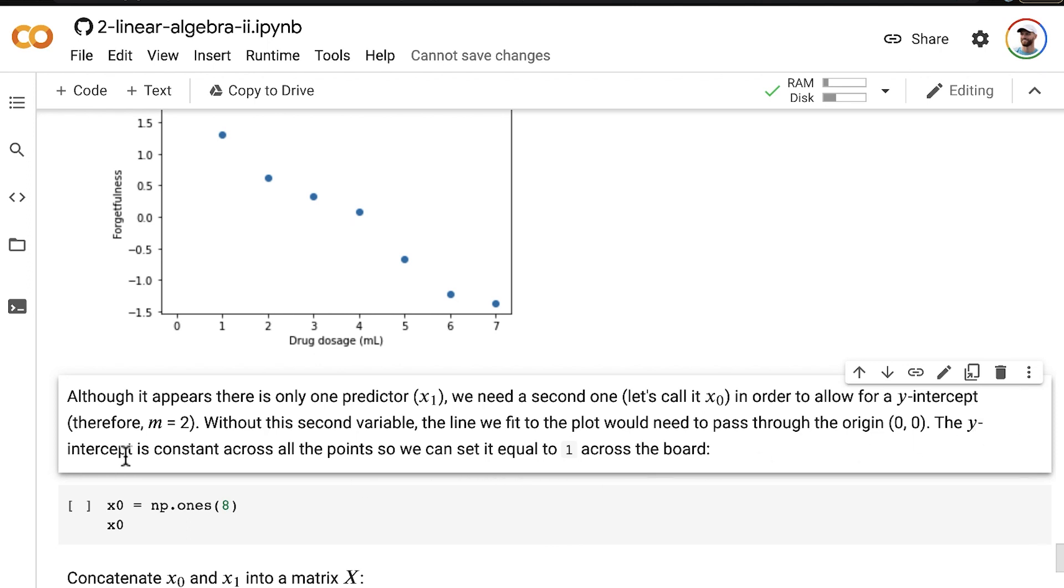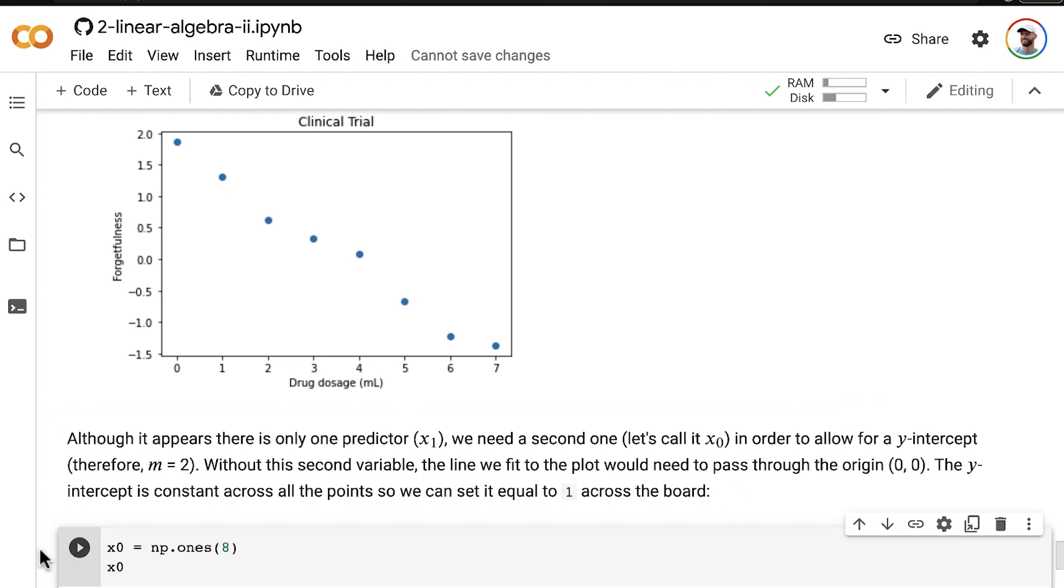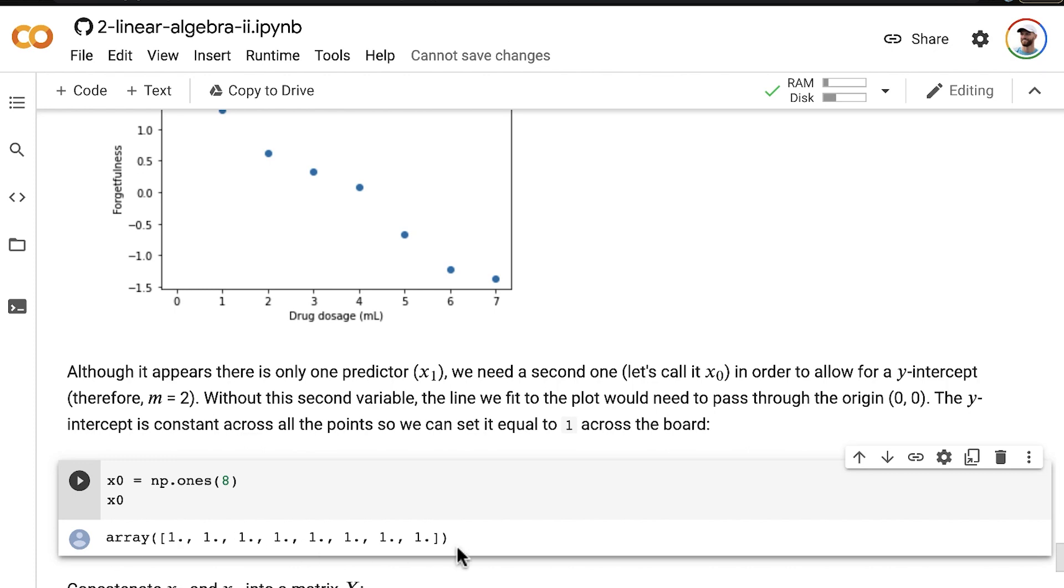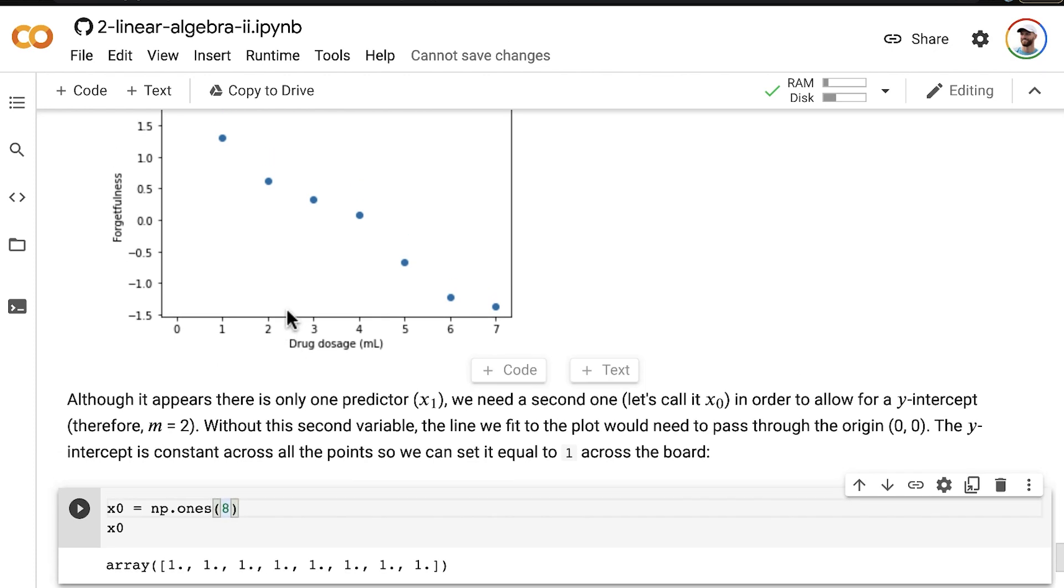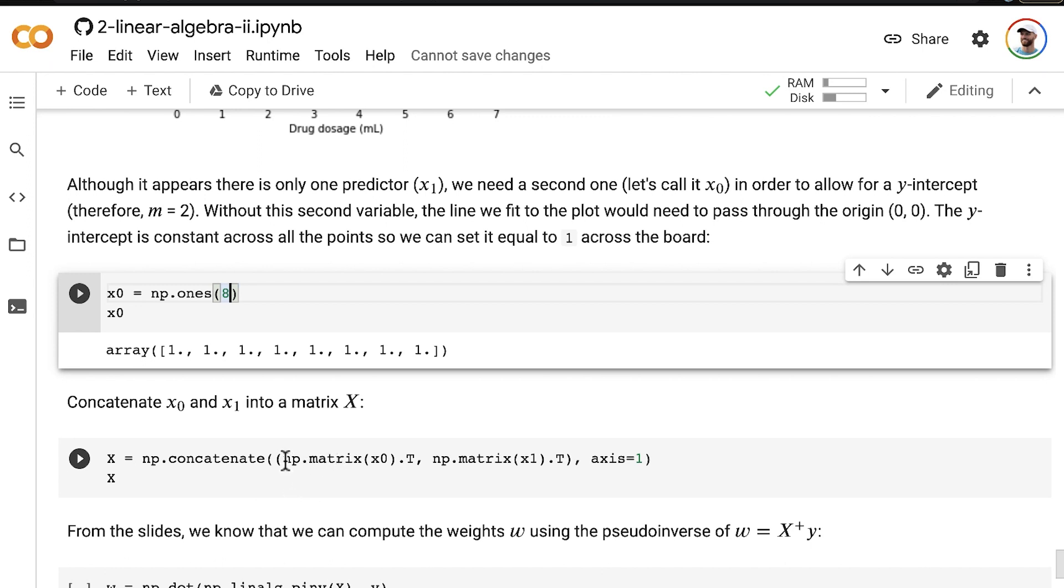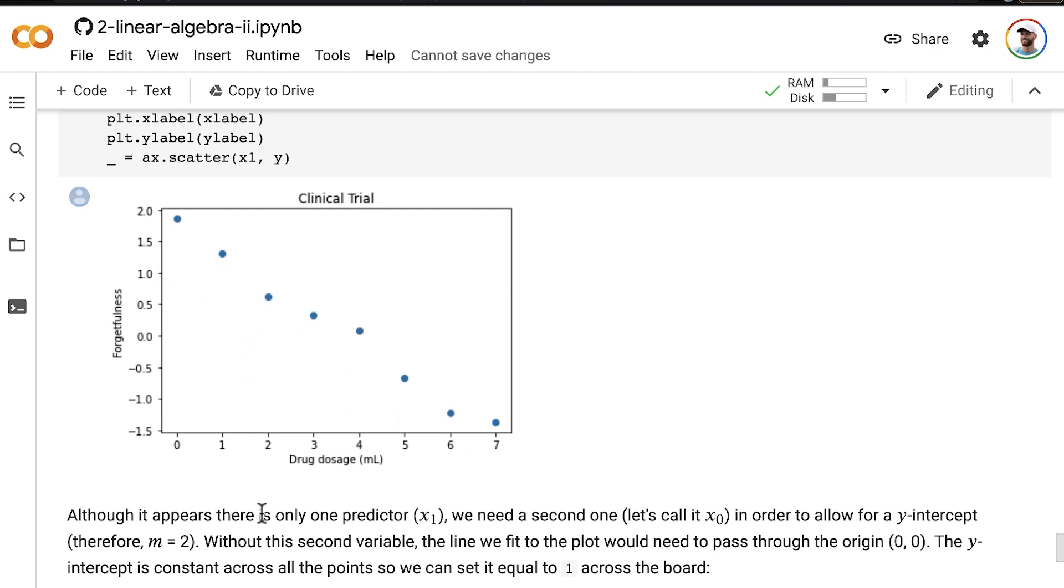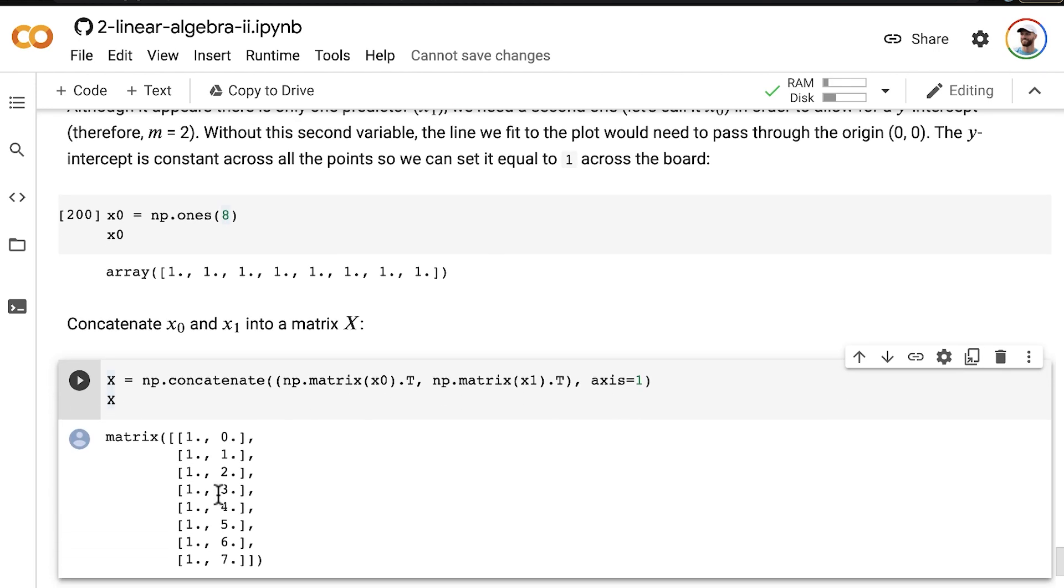The y-intercept is constant across all of our points. So we set it equal to one across the board. We can just set X0 equal to an array of ones, eight of them, because we have eight data points. And then now we can concatenate our X0 and X1 vectors into a matrix. I'm going to transpose both vectors and then concatenate them together, setting axis equal to one so that they're concatenated as columns next to each other. Here's X0 for our y-intercept. And then we have our actual varying drug dosage values as the other column in matrix X.